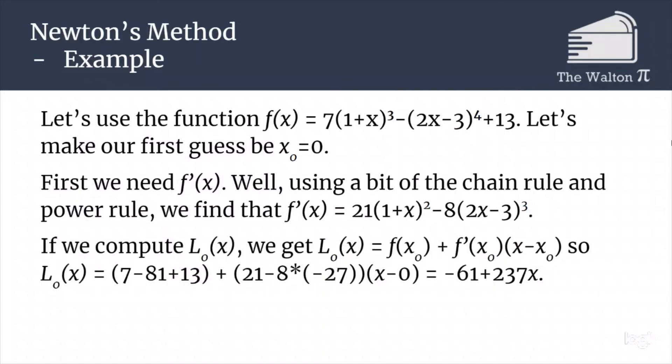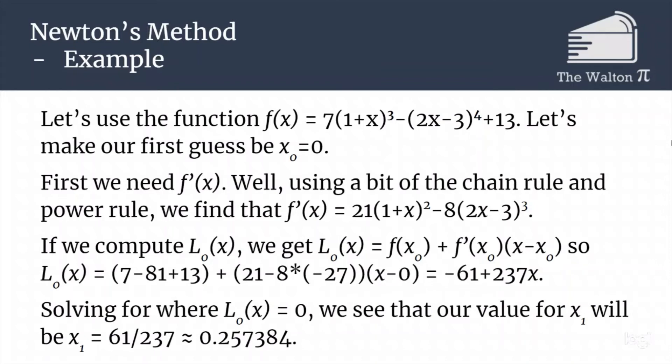If we then compute our first linear approximation, or our zeroth linear approximation, so L₀, we would get L₀(x) = f(x₀) + f'(x₀)(x - x₀). So that means that L₀(x) is equal to 7 - 81 + 13, so that's f(x₀), plus 21 - 8 times -27, that's f'(x₀), times x - 0, which gives us -61 + 237x. If we then solve for where that's equal to 0, we find that x₁ is going to be 61 over 237, which is about 0.257384.